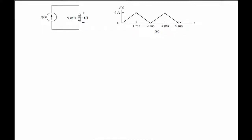Welcome back. In today's problem we want to determine the voltage, instantaneous power, and average power for an inductor. We have a periodic triangular waveform given for the current, and we'll use that in our expression for voltage across the inductor. The equation for voltage is V(t) = L times the derivative of the current.